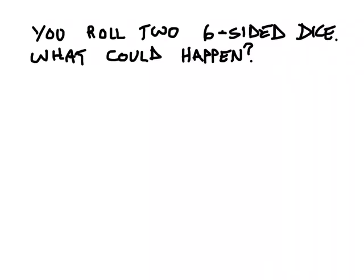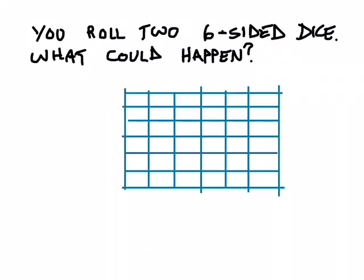Here's a really commonly misunderstood problem: you roll two six-sided dice — what could happen? People will typically say six plus six makes 12, so 12 things can happen. That is not the case, and doing a combinations diagram can clearly help us see why. Because I have two six-sided dice, six things can happen on each die, so I'll list the numbers one through six in each of my rows and columns.